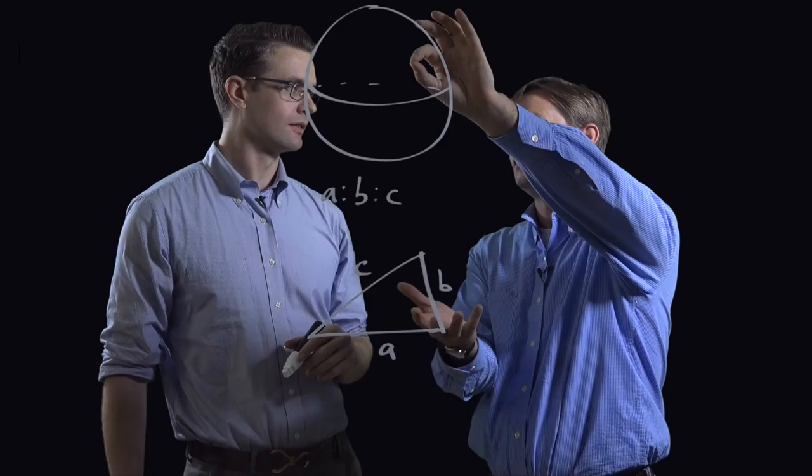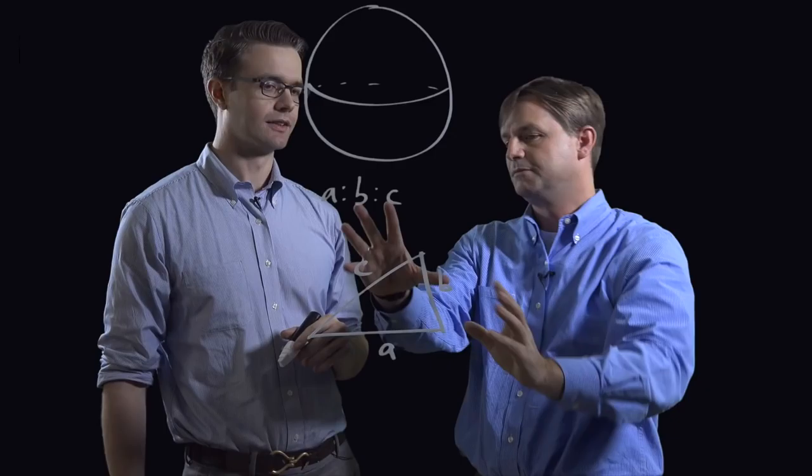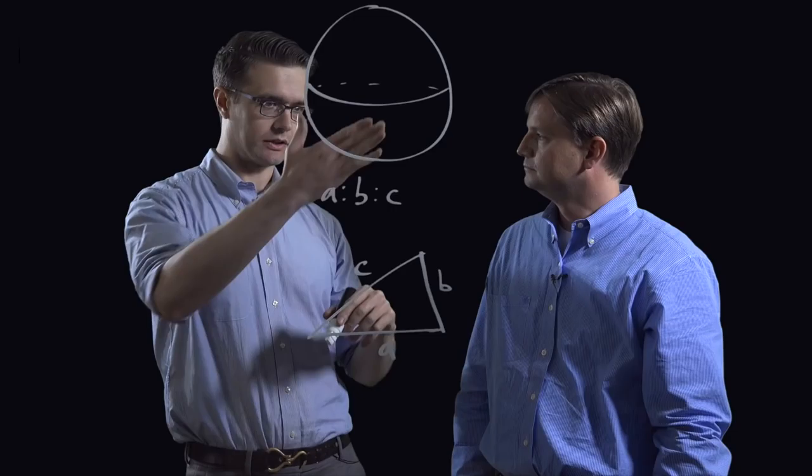And so what you're saying is that for every single triangle that you have corresponds to some point on the sphere. So if I have a point over here, maybe it's a weird shaped triangle, maybe it's a right triangle. Okay, so in this case, show us what the picture would look like for acute triangles.